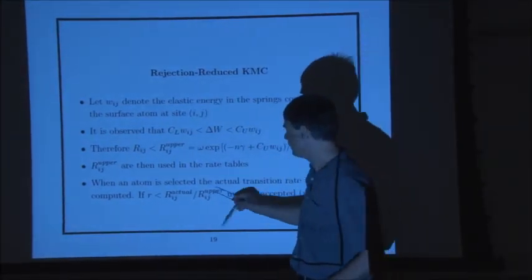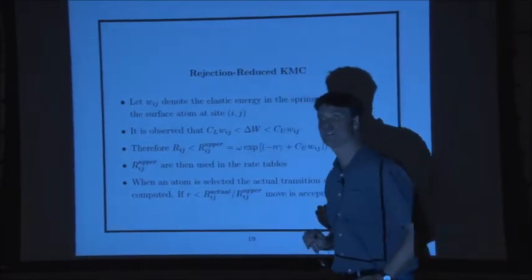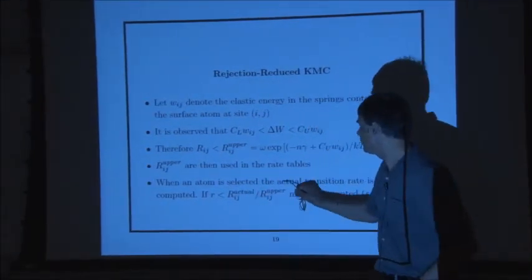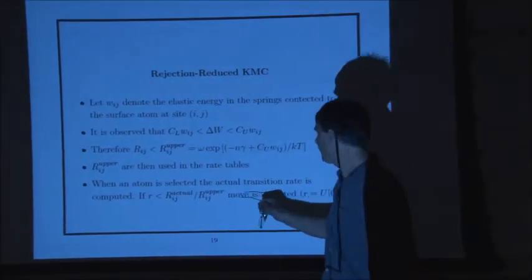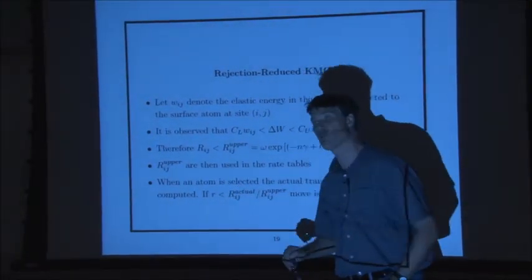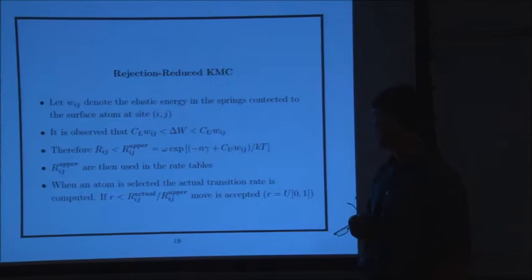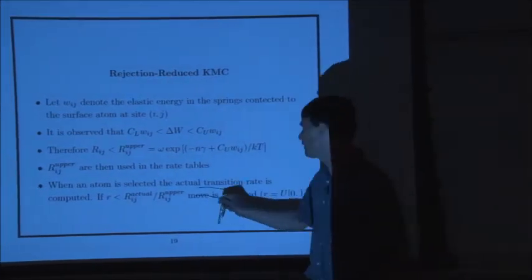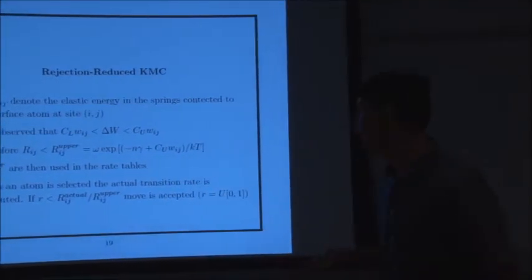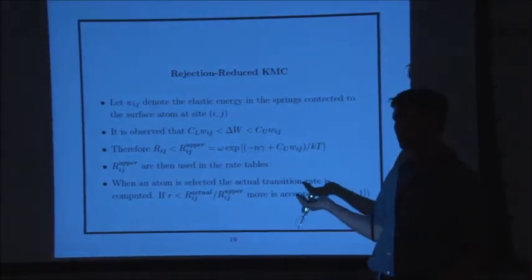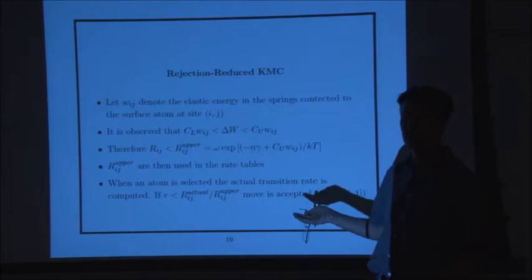When you select an atom, you actually compute its actual rate by relaxing the system and calculating the rate. This ratio should be less than one. Depending on how much less than one it is, you decide with what probability to accept the rate. If the actual rate equals the upper bound, you accept. If the actual rate is half the rate estimate, you only accept with 50% probability.